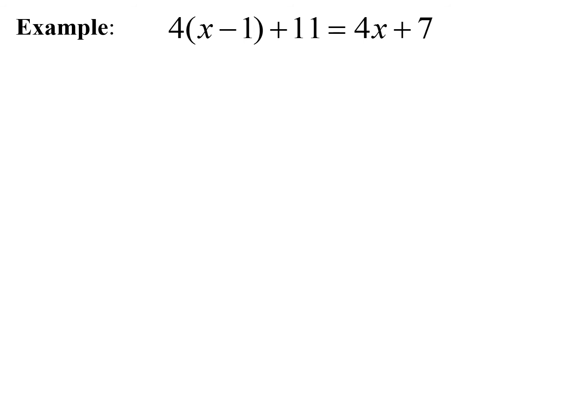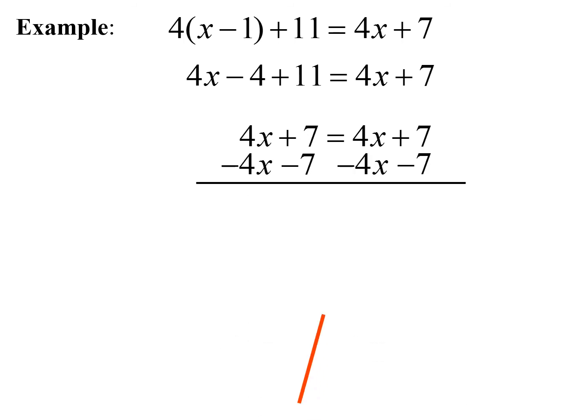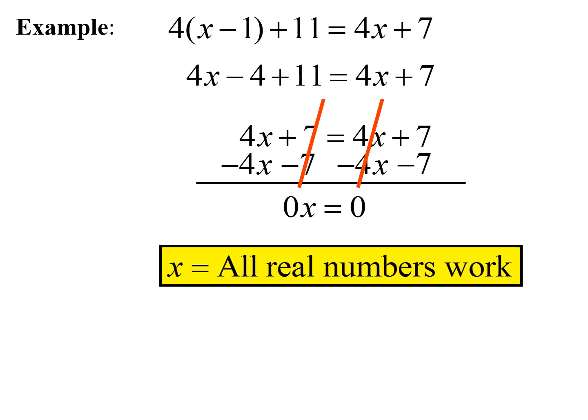One more with the distributive property. Distributing 4 gives 4x minus 4 plus 11 equals 4x plus 7. Combining like terms on the left: 4x plus 7 equals 4x plus 7. Subtracting 7 from both sides and subtracting 4x from both sides, we get 0x equals 0. Dividing both sides by 0, x equals all real numbers — this side will always equal the other side no matter what we plug in for x.